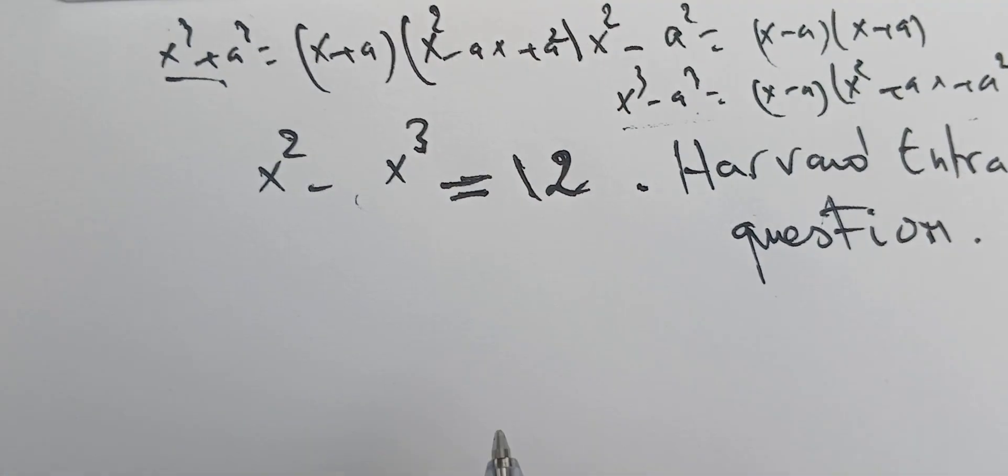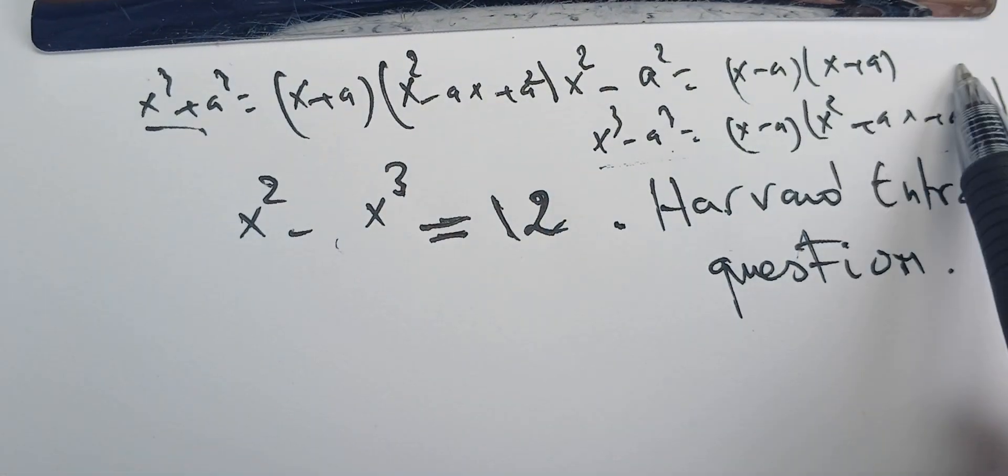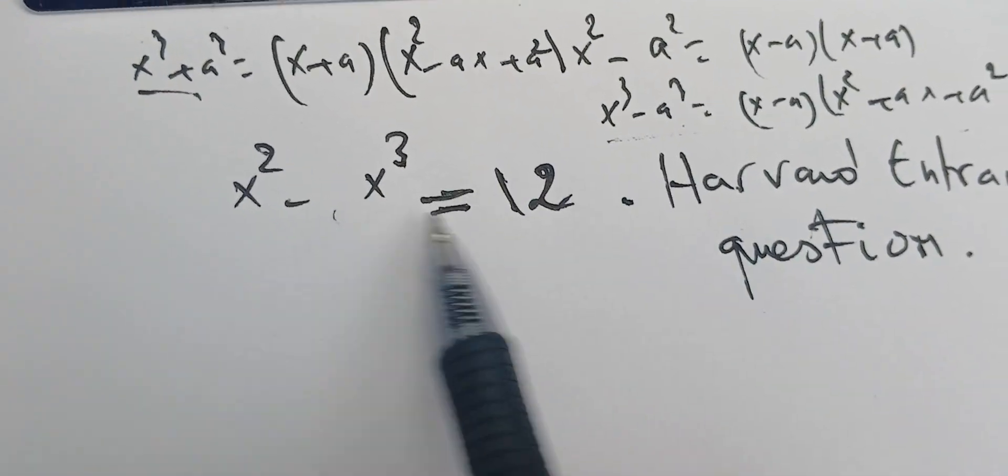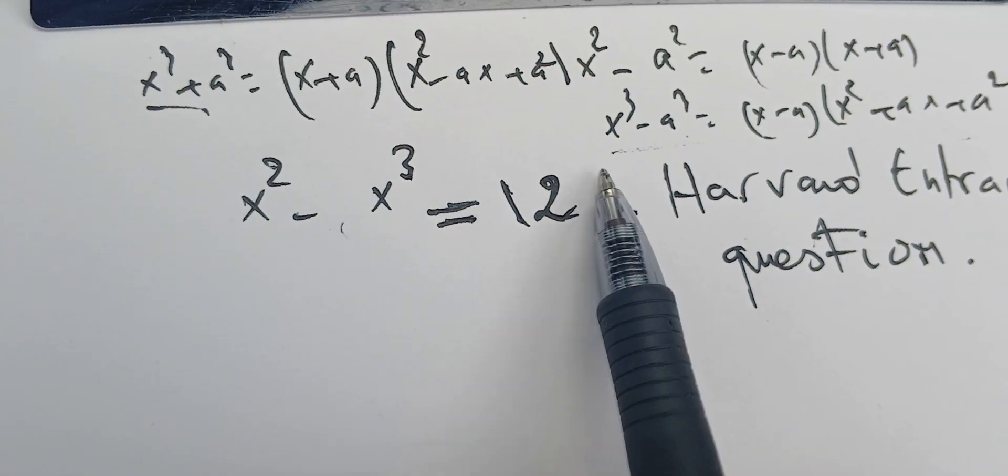Most of the time we do this algebra in our head. Sometimes we check small numbers: zero is not a solution, one, two is not a solution, minus one is not a solution.